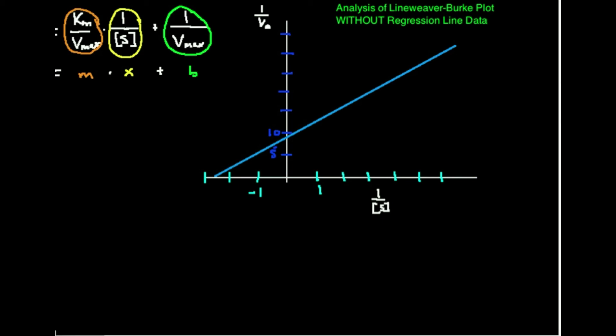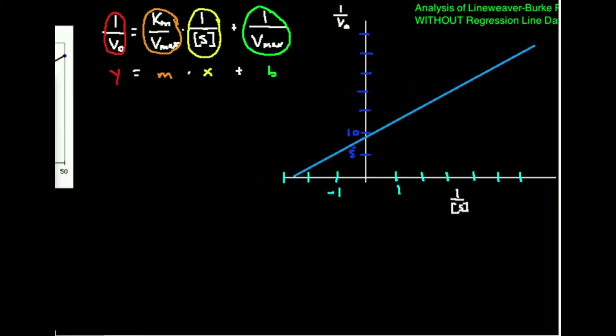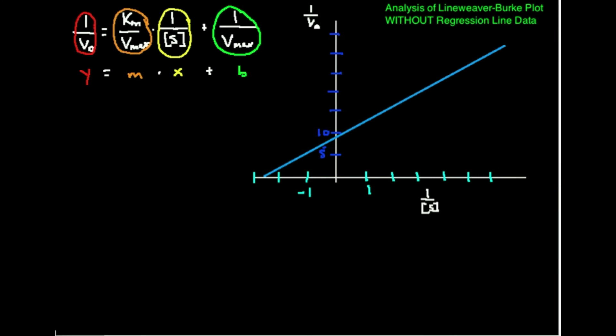In the last video, we looked at how you analyze a Lineweaver-Burk plot when you have the linear regression line. That means you would have either been given the linear regression equation — which, if you recall, was in the form y = mx + b, the equation for a straight line — and it's a lot easier to do that because you can get more exact numbers.